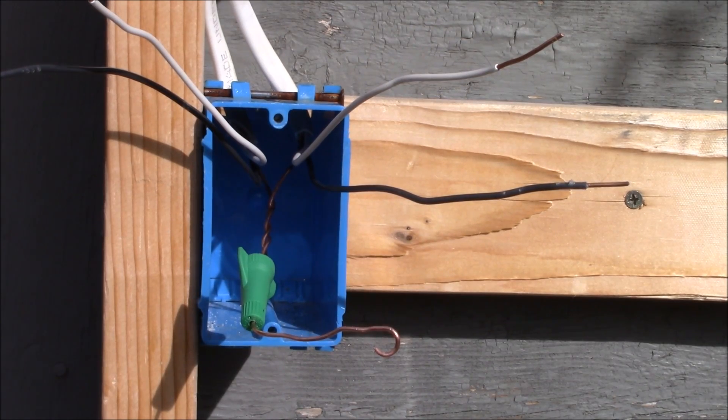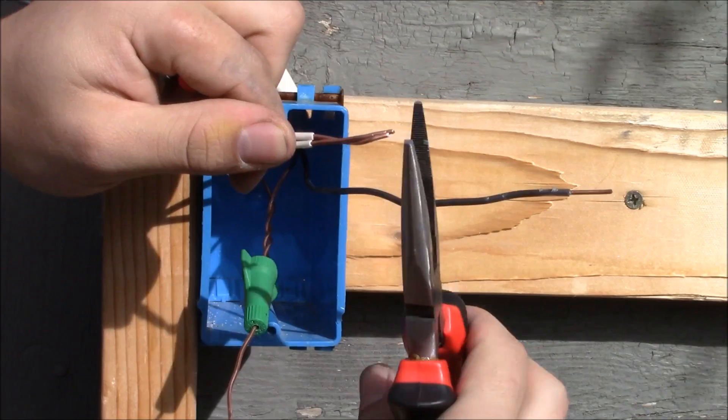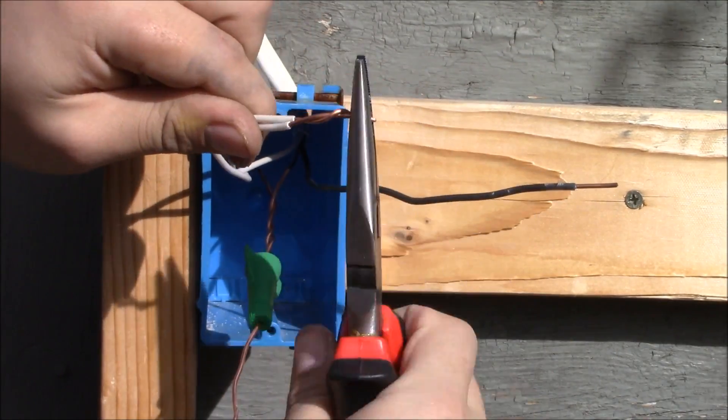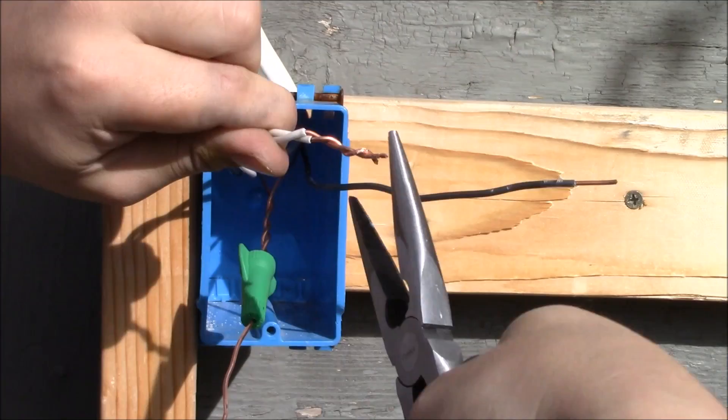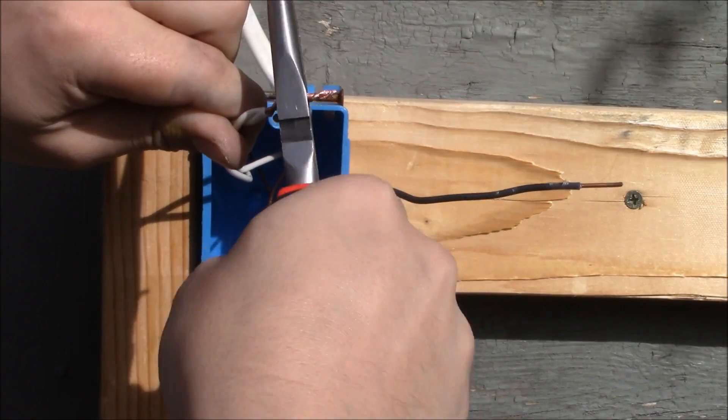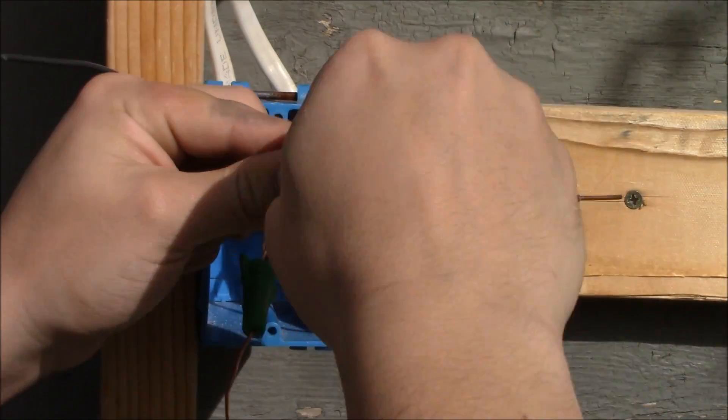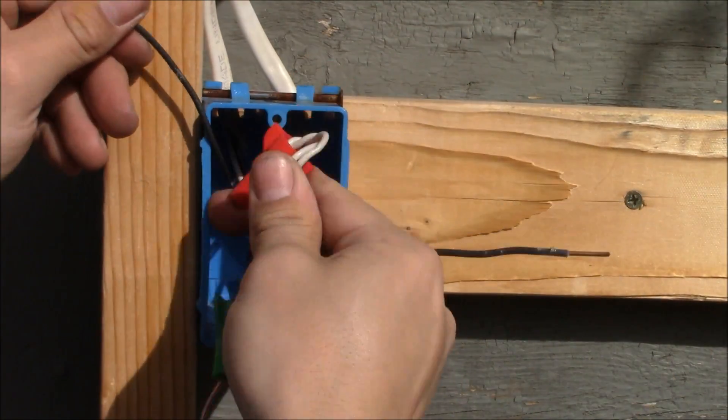Now we're going to connect together the neutrals. The neutrals are not used in single pole switches, but it has been code since 2011 that all switch boxes need to be provided with neutral wires. Now we're going to splice them together and use a wire nut, then place them in the back of the box.